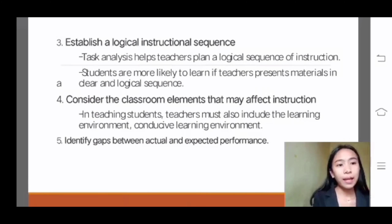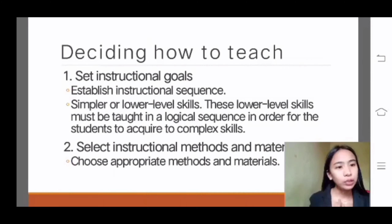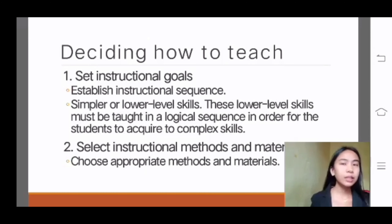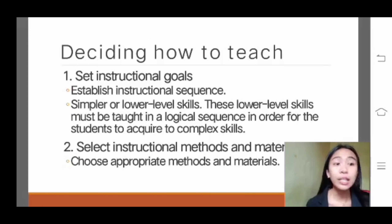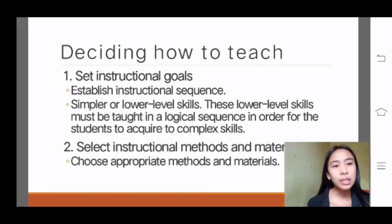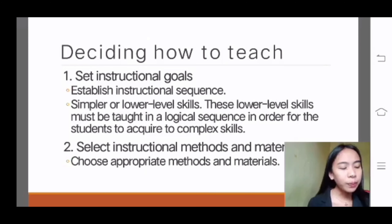The second step of planning instruction is deciding how to teach. This is where you will use strategies or techniques on how to share the lessons with your students. Number one: set instructional goals. The process of setting instructional goals is to establish the instructional sequence — simpler or lower-level skills taught in logical sequence so that students can acquire more complex skills. Most complex skills consist of a combination of simpler, lower-level skills.